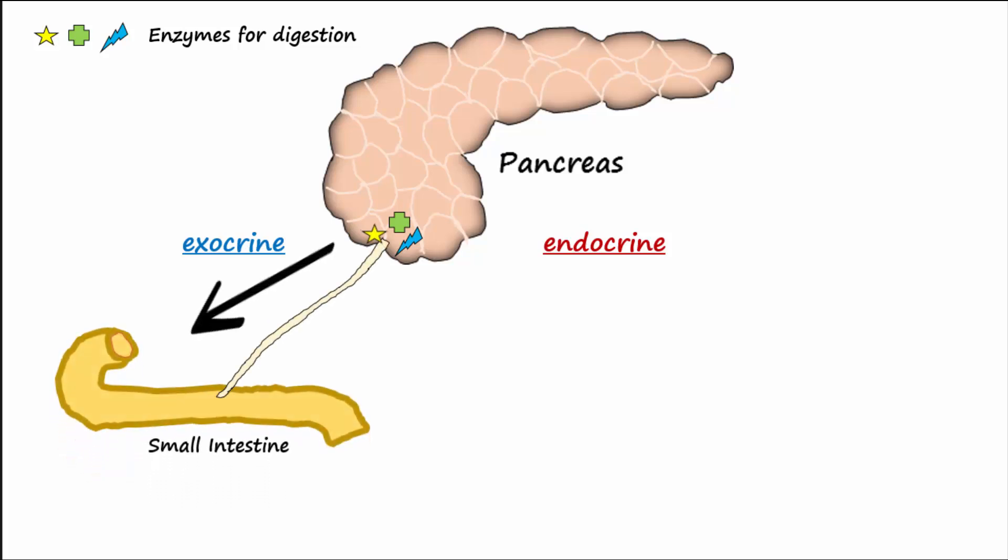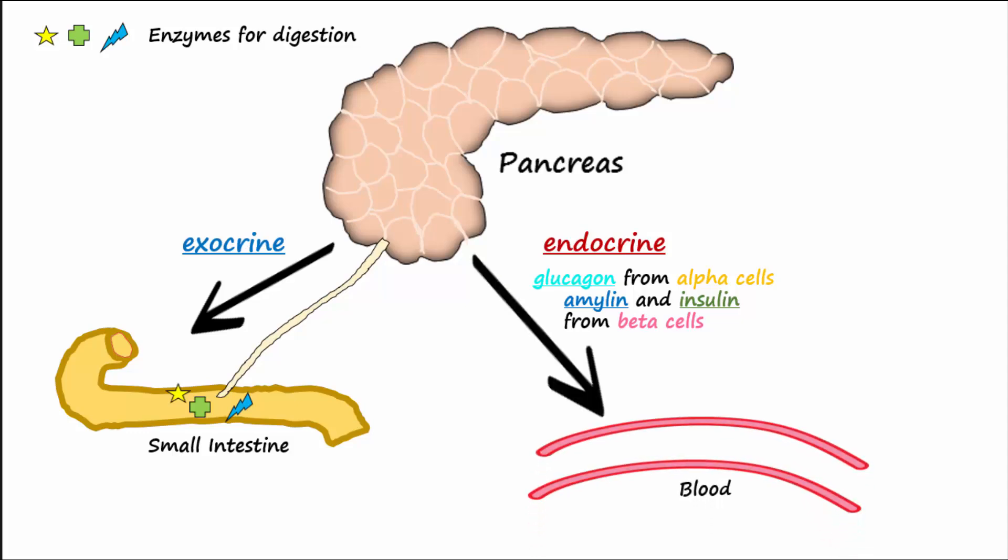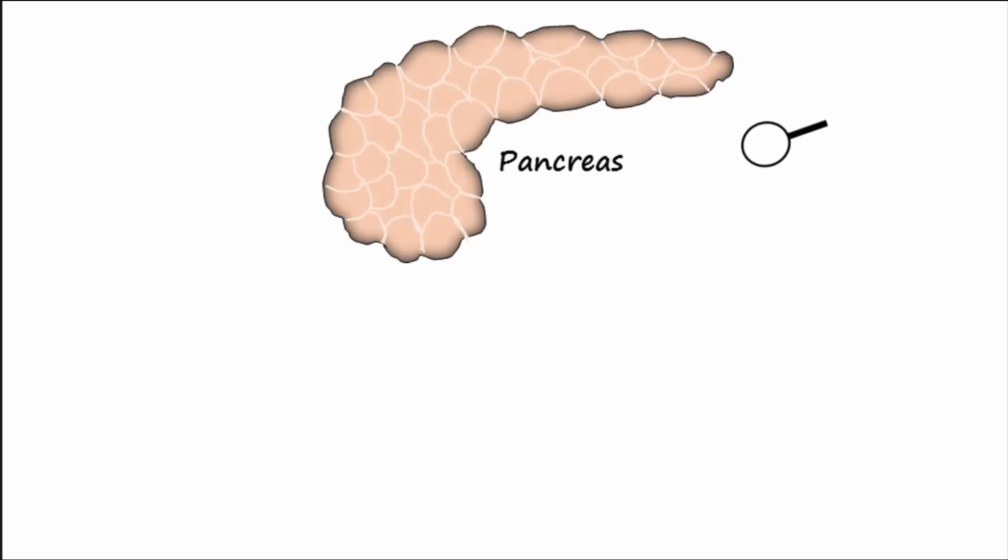Endocrine because it produces glucagon from alpha cells and amylin and insulin from beta cells that all get secreted into the blood. Magnifying a section of the pancreas, we find beta cells in the islets of Langerhans.